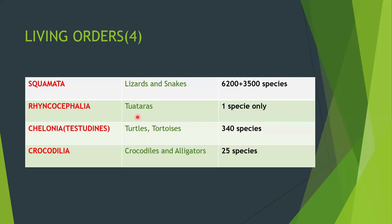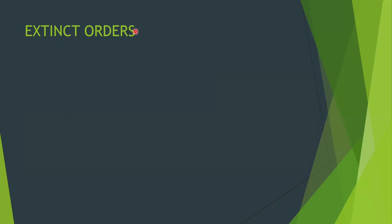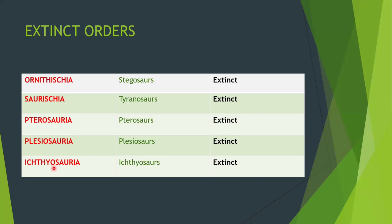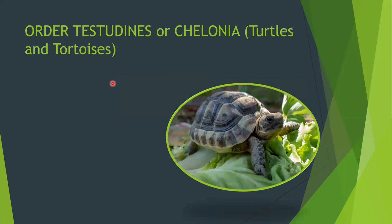Rhynchocephalia includes one species — the tuatara. Chelonia or Testudines includes turtles and tortoises with 340 species. Crocodilia includes crocodiles and alligators with 25 species. There are four living orders of reptiles. Extinct orders include Ornithischia (e.g., Stegosaurus), Saurischia (e.g., Tyrannosaurus), Pterosauria, Plesiosauria, and Ichthyosauria.